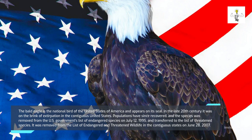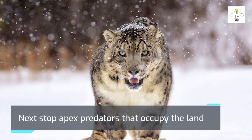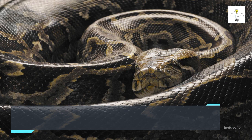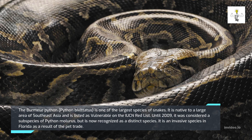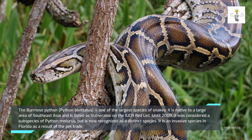Next are apex predators that occupy the land. The Burmese python, Python bivittatus, is one of the largest species of snakes, native to a large area of Southeast Asia and listed as vulnerable on the IUCN Red List. Until 2009 it was considered a subspecies of Python molurus, but is now recognized as a distinct species. It is an invasive species in Florida as a result of the pet trade.